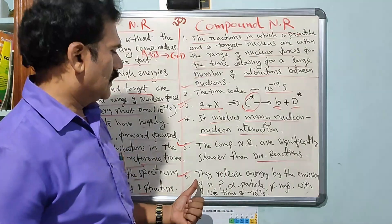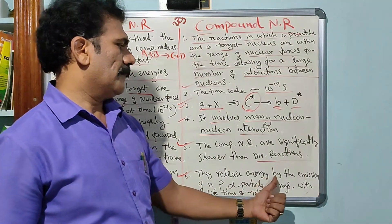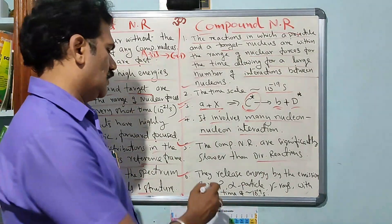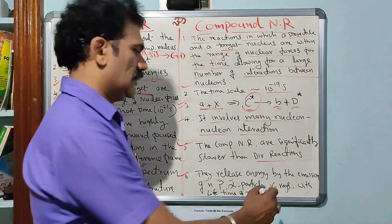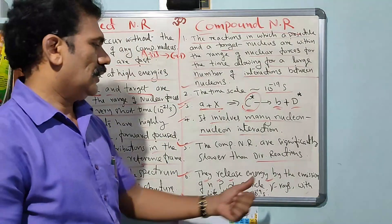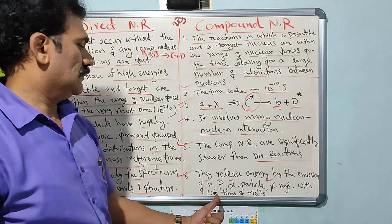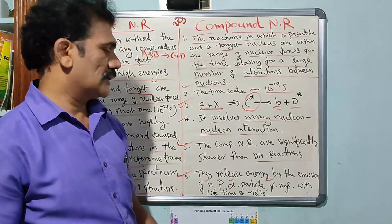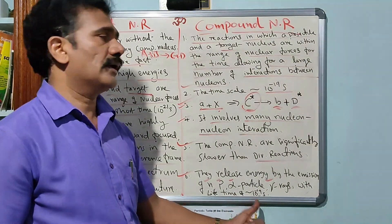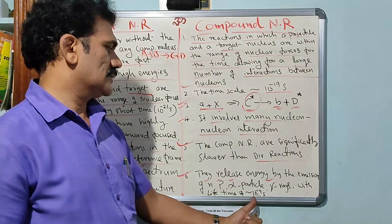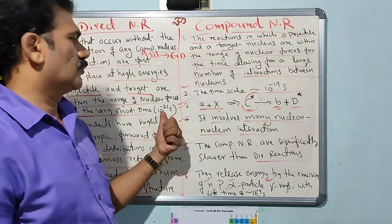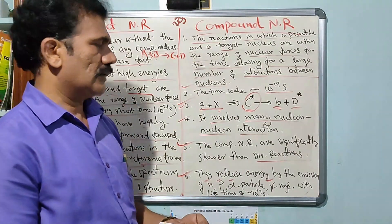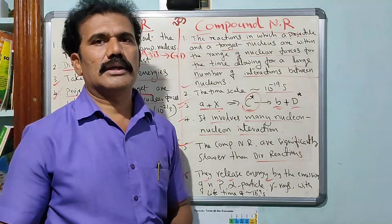The last point is that compound nuclear reactions release energy by the emission of certain ejectiles — neutrons, protons, alpha particles, or even gamma rays — within a lifetime of 10 to the power of minus 19 seconds. This is a larger time compared to the 10 to the power of minus 21 seconds of direct nuclear reactions. These are the key points to remember about compound nuclear reactions.